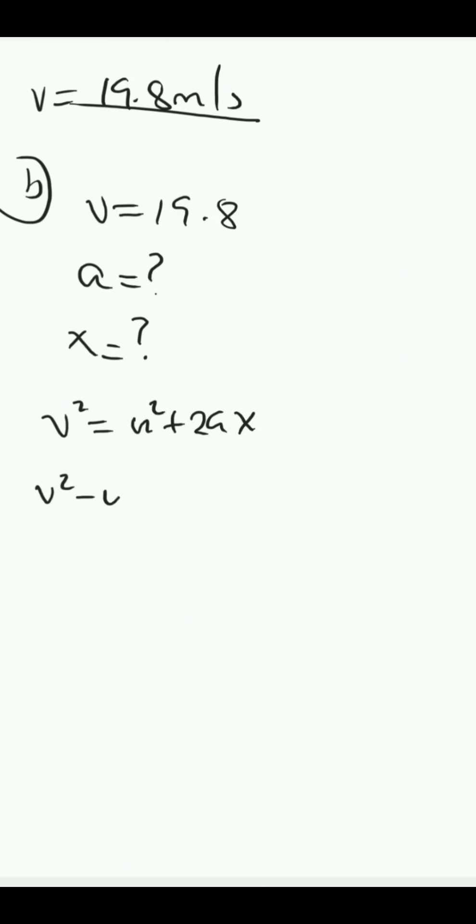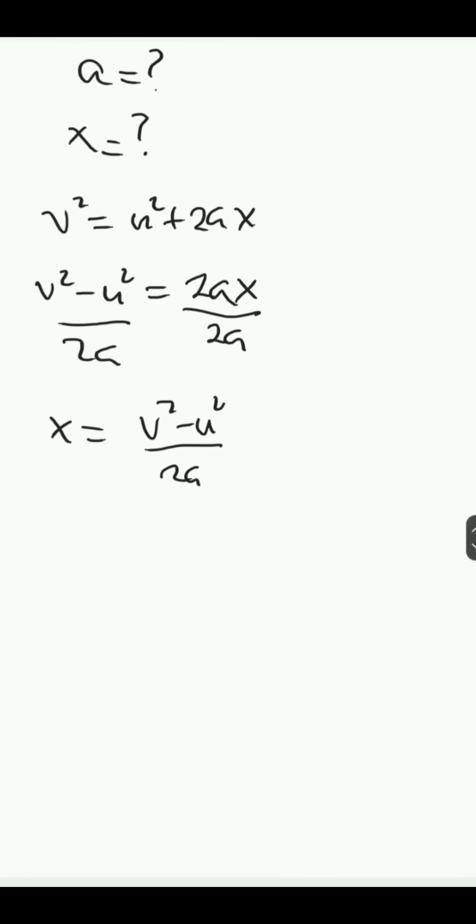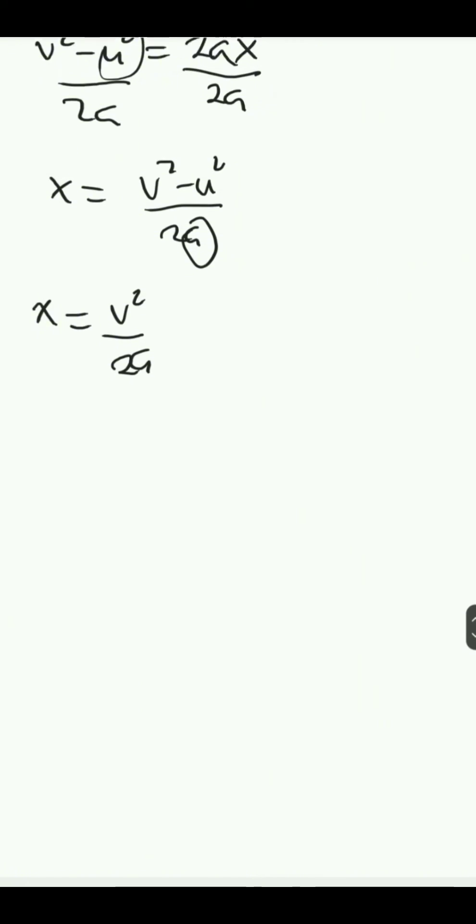When I'm looking for the distance, this gives us our x to be equal to v squared minus u squared over 2a. Now, since u is at rest, x is equal to v squared over 2a.